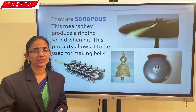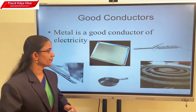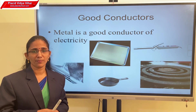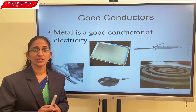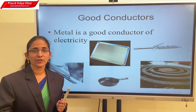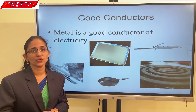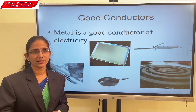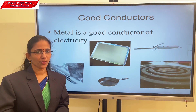The next property is sonorous. Sonorous means the ability of a metal to produce a ringing sound when we strike on it. Most of the metals can produce this ringing sound, so they are sonorous. Because of that property, metals are used for making bells. The last property is conduction of heat and electricity. Most of the metals can pass heat and electricity through them, so they are good conductors of heat and electricity. Because of that, metals are used for making utensils and in electrical appliances.